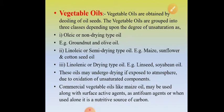Oleic oils are non-drying type — examples include groundnut oil and olive oil. Linoleic or semi-drying type oils include maize oil, sunflower oil, and cottonseed oil. The third category, linolenic or drying type, includes linseed oil and soybean oil.